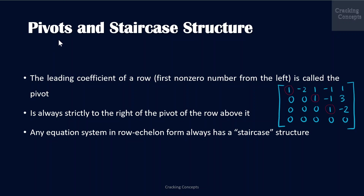The leading coefficient of a row, or pivot, is the first non-zero number from the left. It should always strictly be to the right of the pivot of the row above it. Any equation system in row echelon form always has a staircase structure — the word echelon means a staircase. In the example given here, the pivot elements are in columns x1, x3, and x4. For column x2, the value minus 2 is at the same level as the pivot of x1, and similarly for x5 relative to x4.